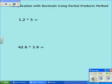Next we're going to take a look at multiplication with decimals using the partial products method. The first thing that we want to do is look at our problem: 1.2 times 5.